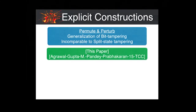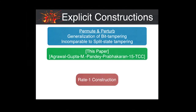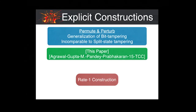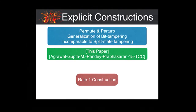In these two works, we have been able to construct a rate-one construction for permute-and-perturb. The companion paper presented at TCC earlier this year provides a rate amplification technique which takes the construction presented in our paper and makes it into a rate-one construction.